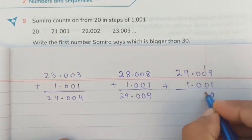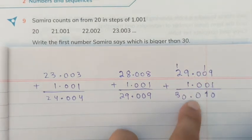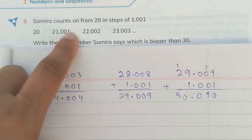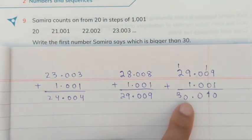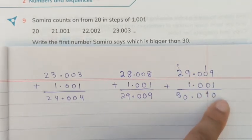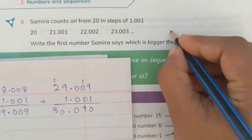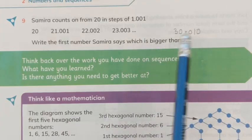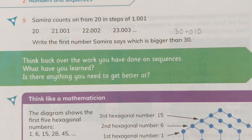Working towards 30: the last term in the 29s is 29.009. Adding 1.001: 9+1=10 in the thousandths place (carry 1), 0+0+0=0 in hundredths, 0+0=0 in tenths, and 29+1=30 in the units/tens. So the answer is 30.010. Since 29.009 is the last term below 30, the first number Samira says that is greater than 30 is 30.010.